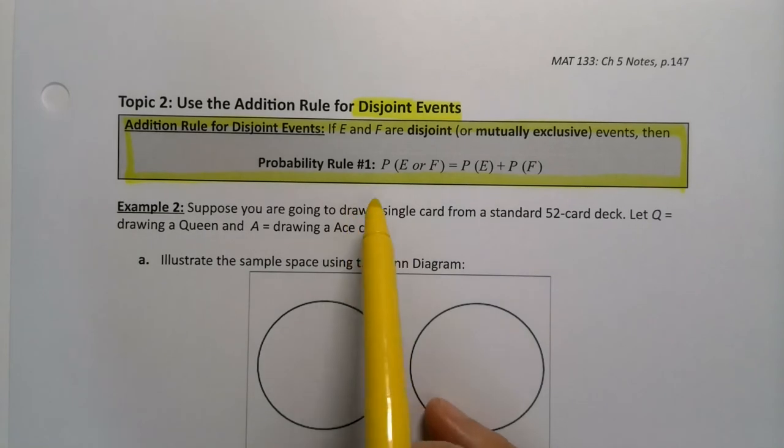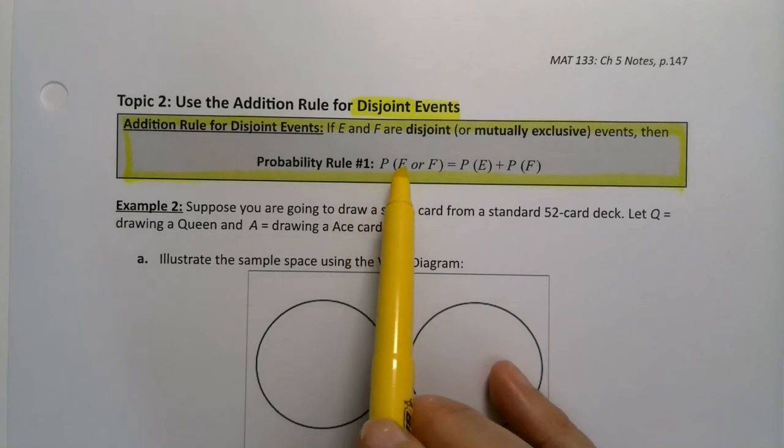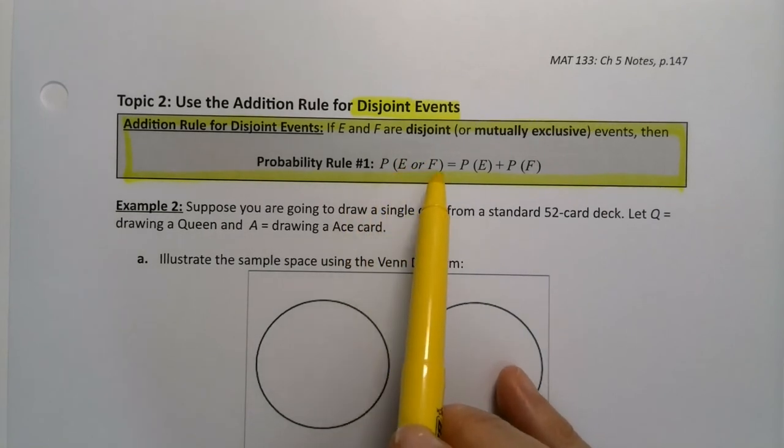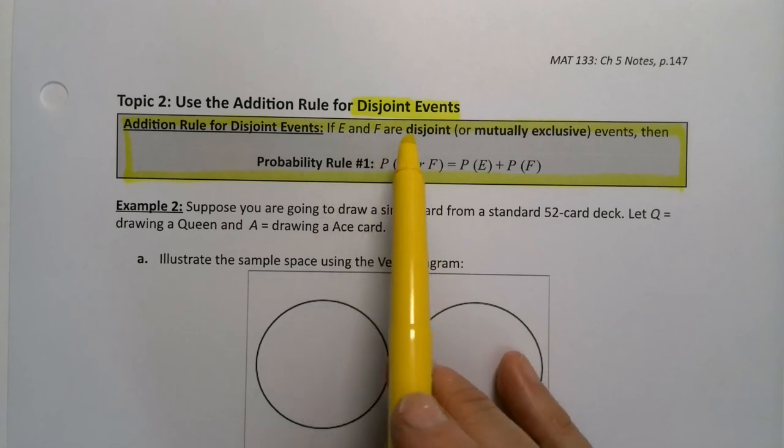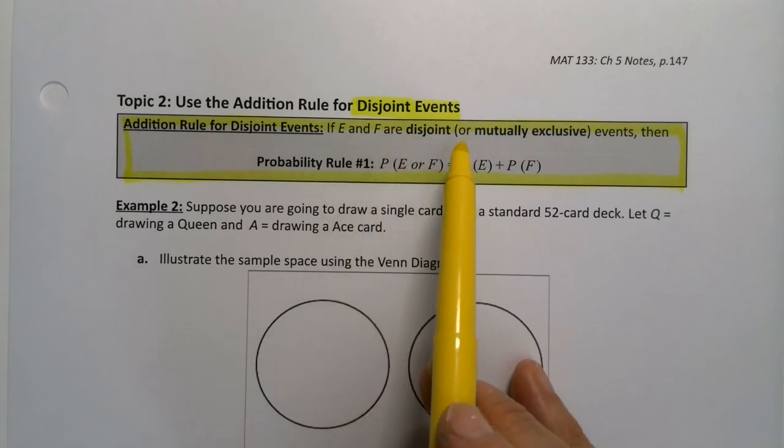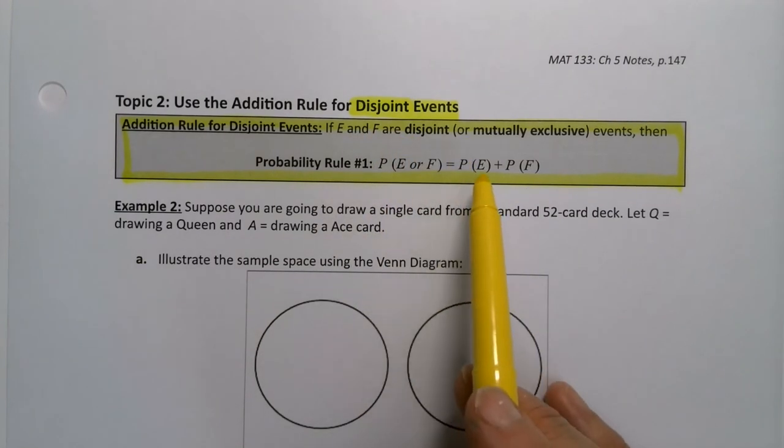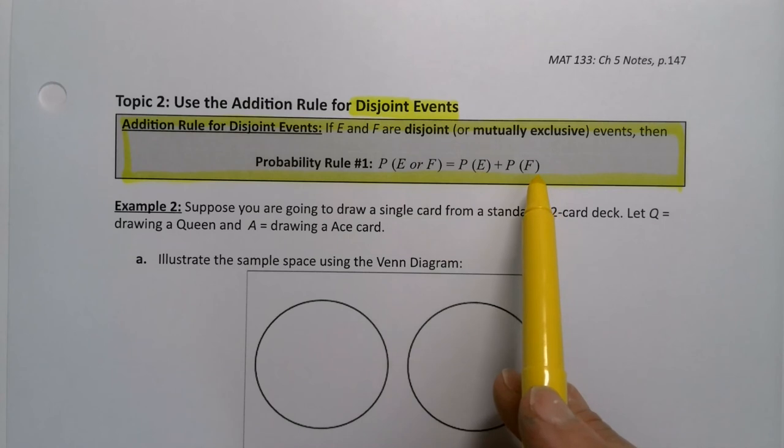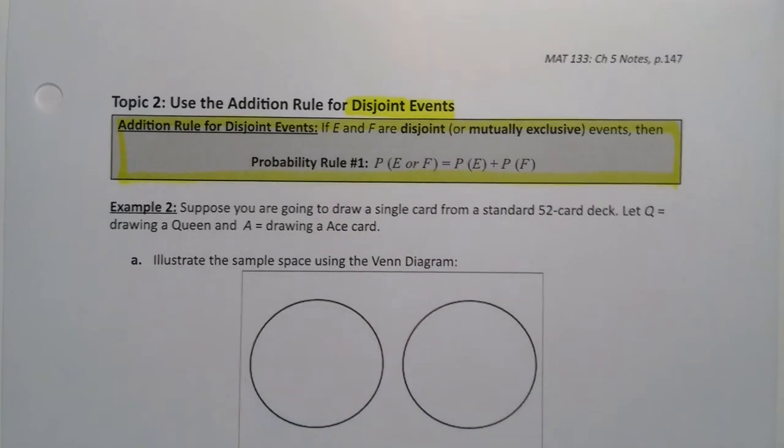What does this say? It says if you want the probability of E or F, and E and F are two disjoint or mutually exclusive events, then you take the probability of E and add to it the probability of F. Simple as that. So let's look at an example.